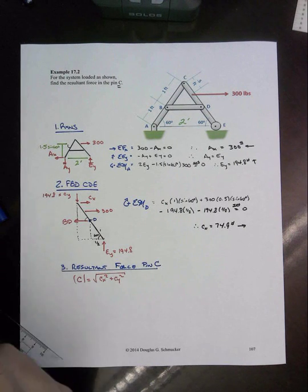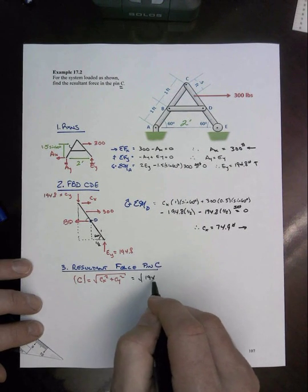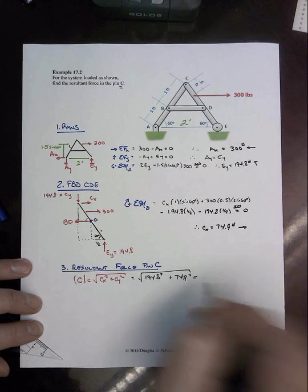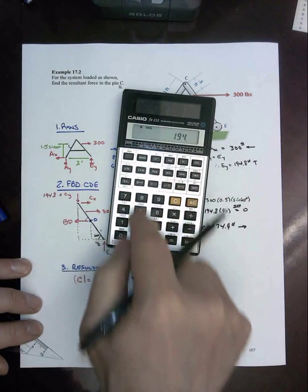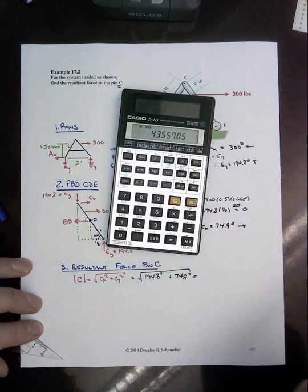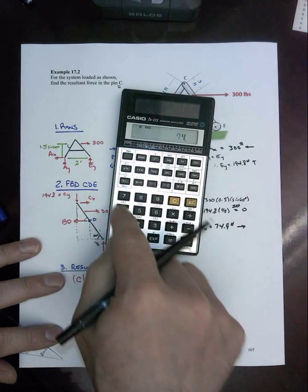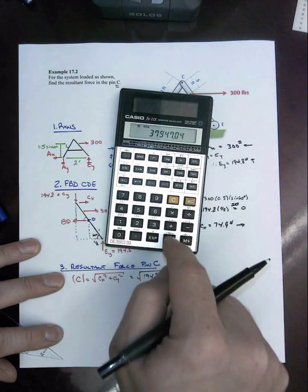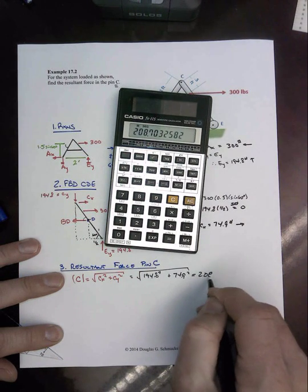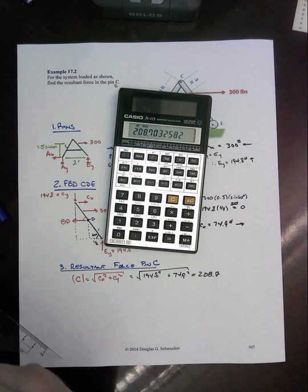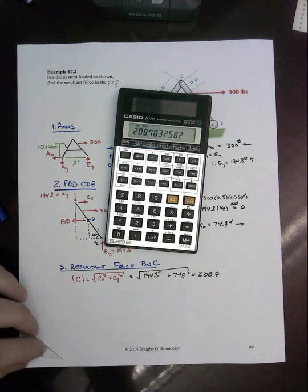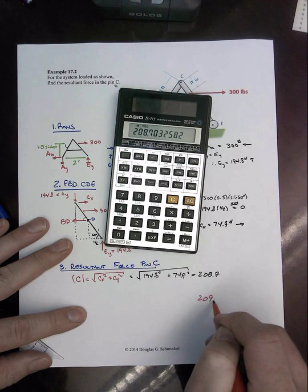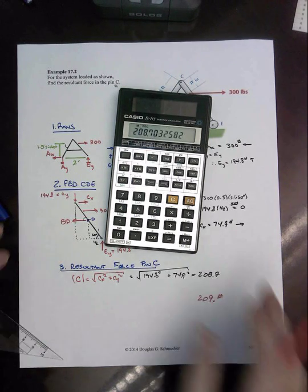And we have that CX was 74.9 squared—I didn't do that right, I don't think, going too fast here—plus 194.8 squared equal to the square root. And our magnitude is going to be 208.7. Now we could care about the direction here, but which side are we looking at would be a problem here.